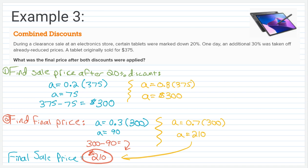The biggest mistake students make with combined discounts is trying to add 20 plus 30 to say you get 50% off — that's not the case. 50% off $375 would be $187.50, which is a bigger discount than you're actually getting. You have to find the price after the first discount, then apply the second percent to that reduced price. There are multiple steps required for combined discounts. That's it for finding the price after a discount — check out the next video for more help with discounts.